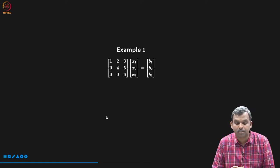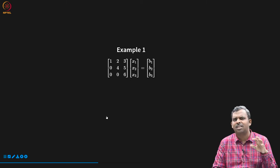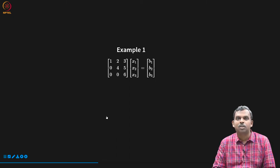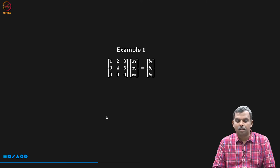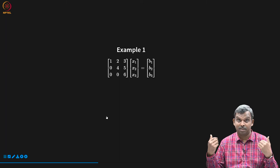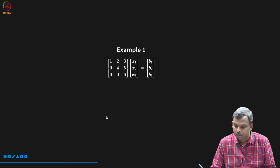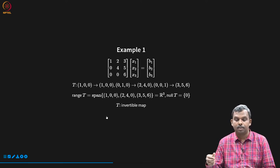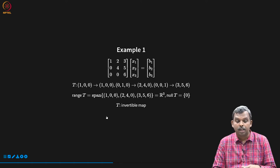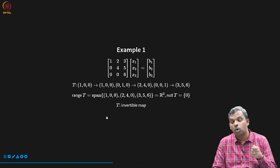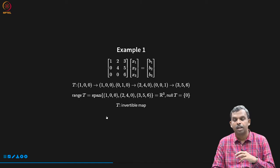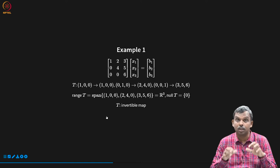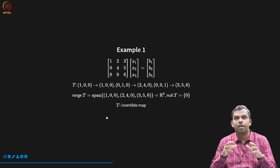Here is a very simple example. You have Ax equals b, a 3×3 example. I have picked A in a specific simple way — a sort of triangular way. You can see there are lots of zeros in critical places. Now when you look at a matrix like this, you have to start thinking about the linear map associated with it. The linear map takes the input (1,0,0) to the output (1,0,0), the input (0,1,0) to the output (2,4,0), and the input (0,0,1) to (3,5,6) — that is the third column.